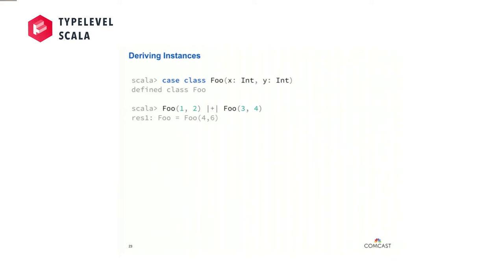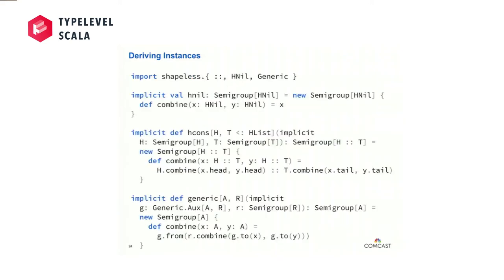Another thing I want to be able to do when providing instances is derive them. If I had this simple product type Foo made up of two ints, and we have a Semigroup for Int, I should automatically be able to have a Semigroup for Foo. There's no mechanism here — it's just pure boilerplate in generating this instance. If you've seen Miles give talks on Shapeless-based derivations, or me give talks on S-Codec's usage of those derivations, or Travis give talks on Circe, you've probably seen slides like this.